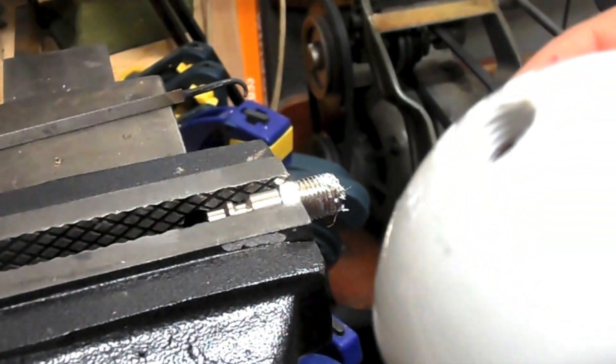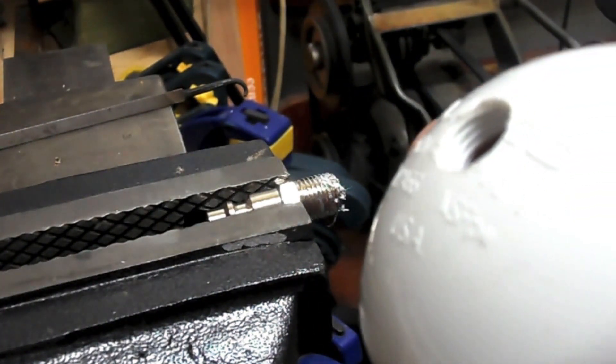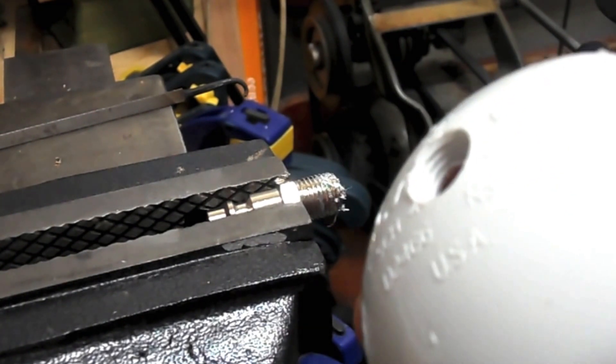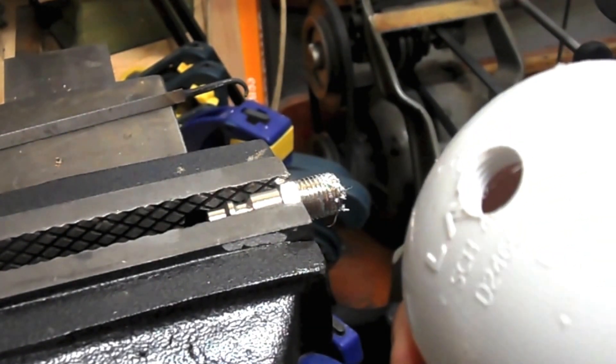And here you can see we've cut some nice threads in this PVC pipe. Once we assemble this with Teflon tape that'll stop air from leaking out.